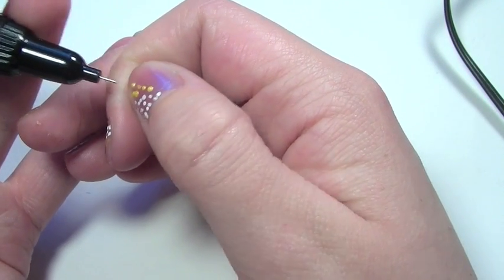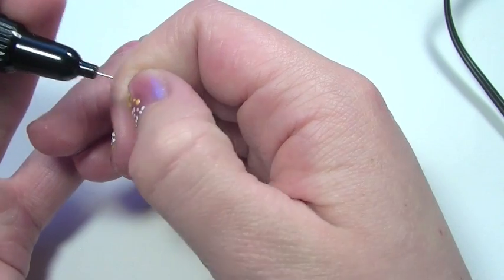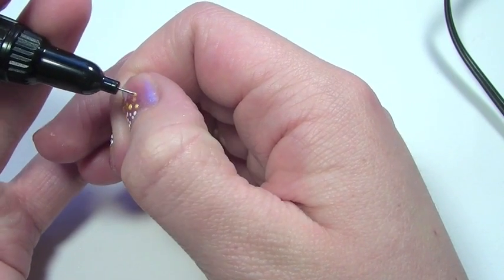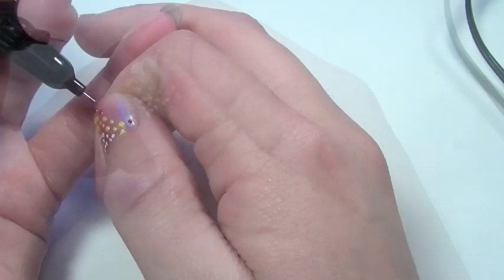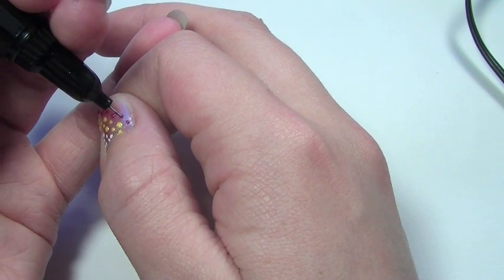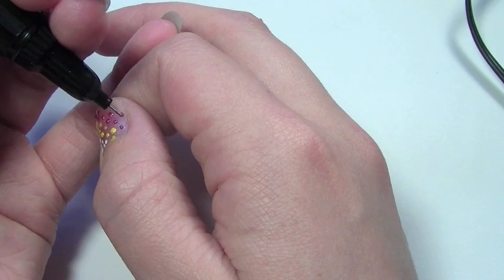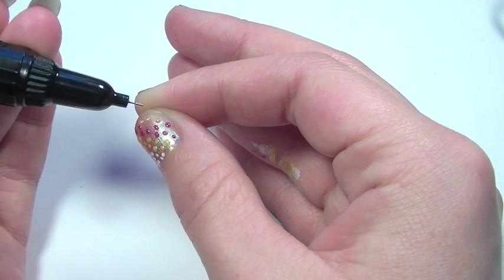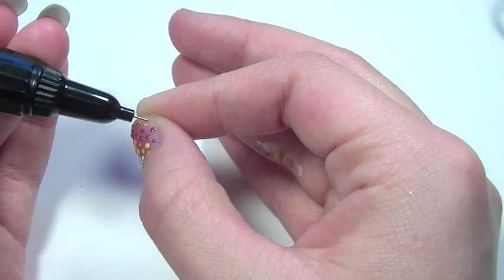I'm going to be using a golden yellow, so again create some light dots. Now after you've done this we're going to change colors again, this time to a purple, and finally we're going to be using a bronze color.